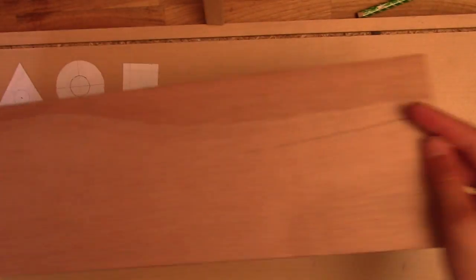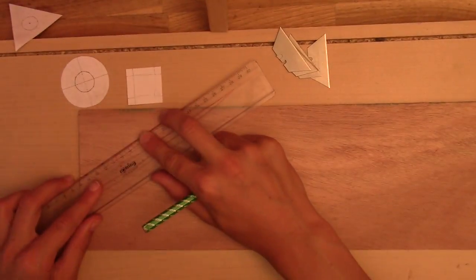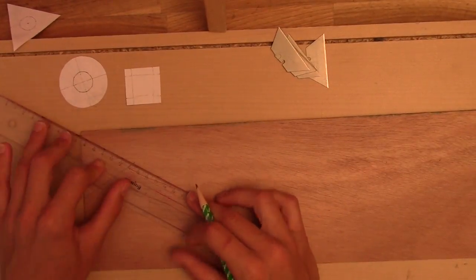First start by drawing out your design on pieces of paper. Then take some thin plywood - I took 5mm thin plywood. Then draw your shape on the plywood with a pencil or any pen.